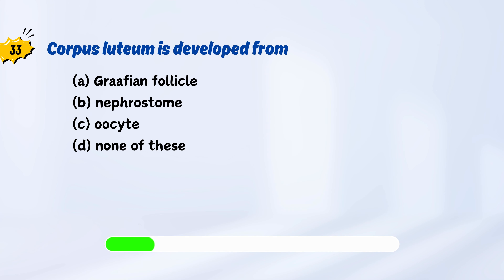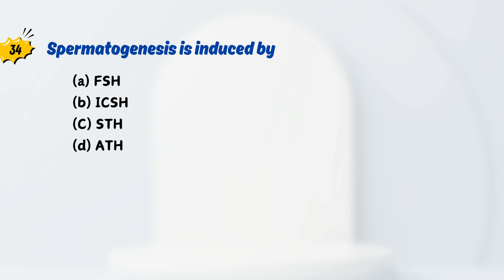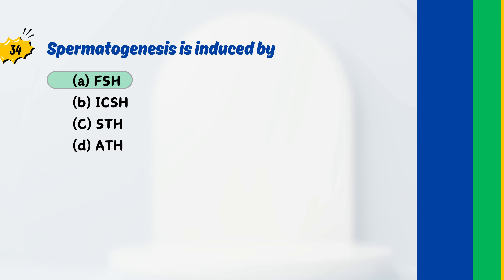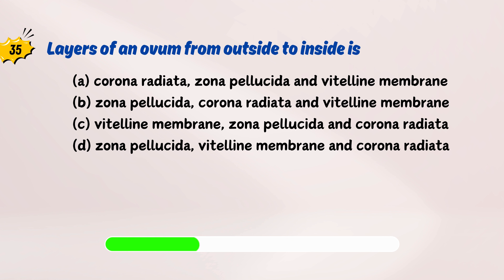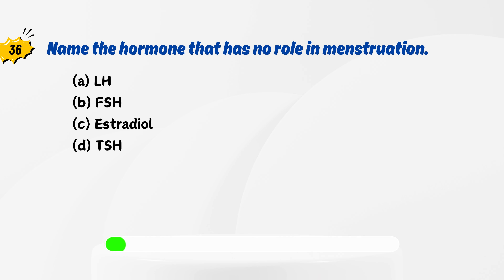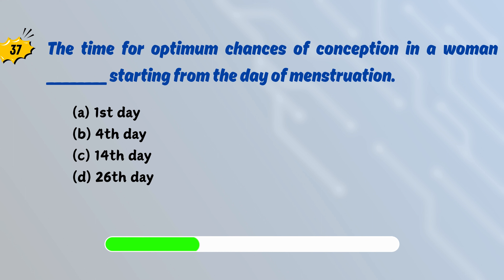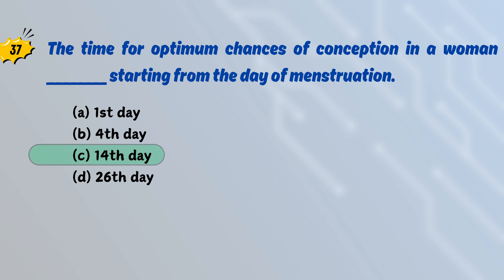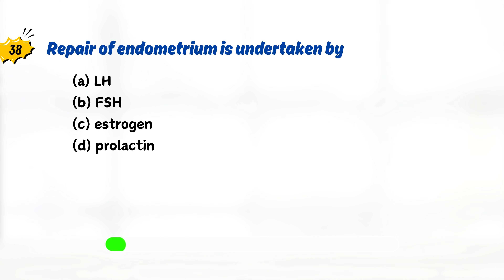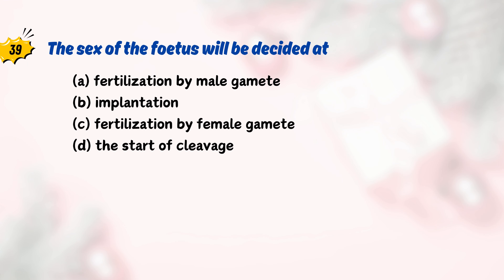Spermatogenesis is induced by? Layers of an ovum from outside to inside? Name the hormone that has no role in menstruation? The time for optimum chances of conception in a woman is starting from the day of menstruation? Repair of endometrium is undertaken by? The sex of the fetus will be decided at?